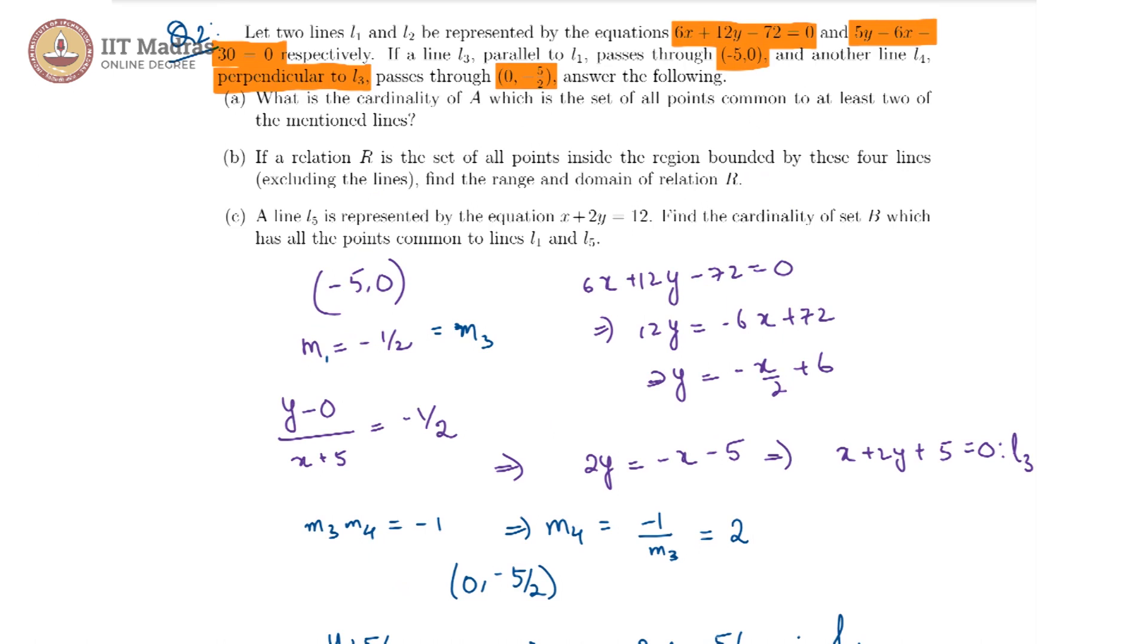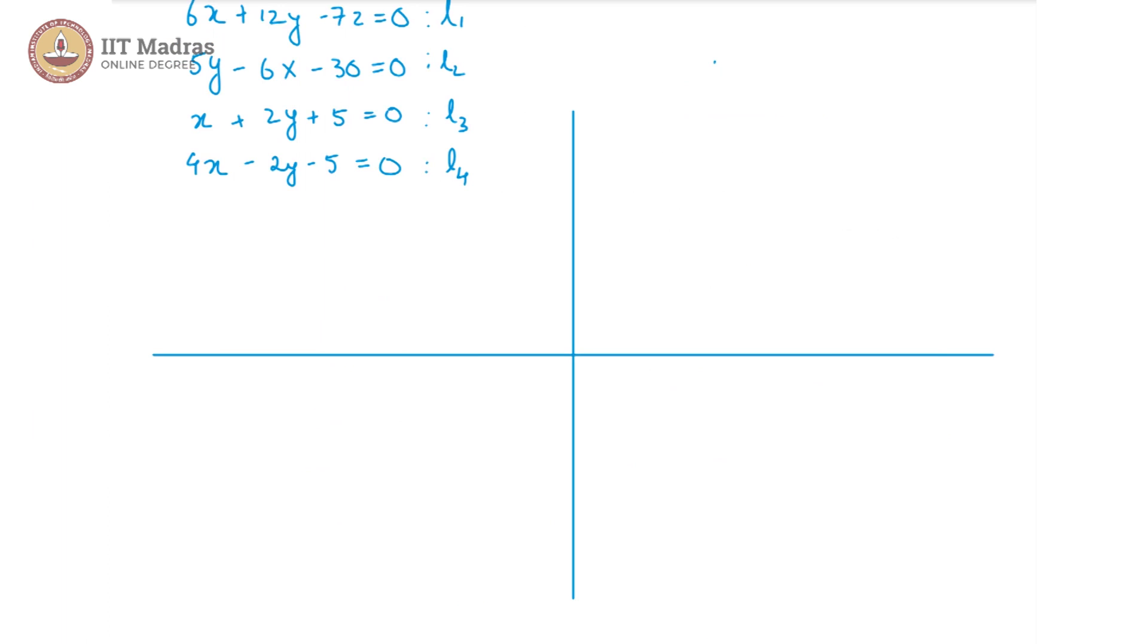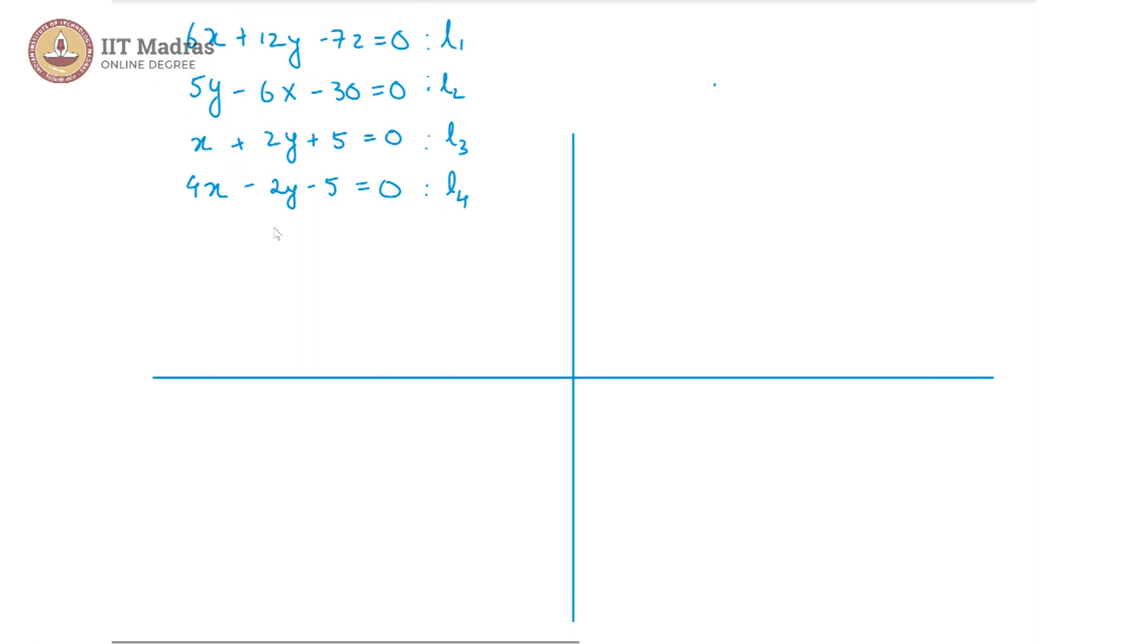Now the question that is being asked is what is the cardinality of A, which is a set of all points common to at least 2 of the mentioned lines. So for that let us try to draw our lines on the graph. 6x + 12y - 72 = 0 would give us if x = 0, it gives us y = 6, which means some point, let us call this here is (0, 6). It goes through this point and if y = 0 you get x = 12. So that would be some point here. So our L1 is this line and now we know L3 is parallel to this line.